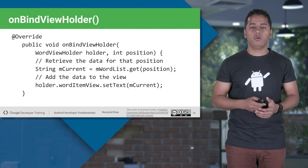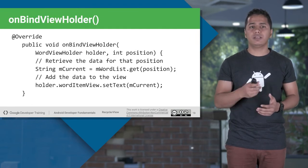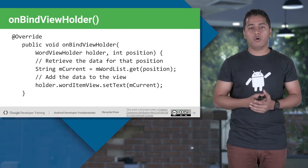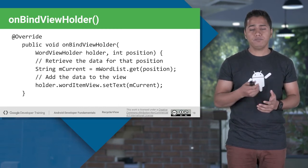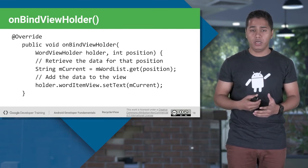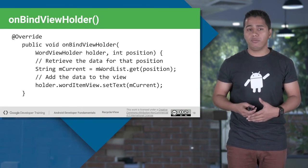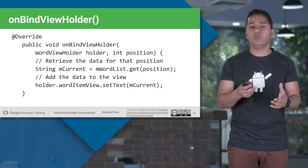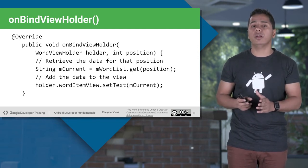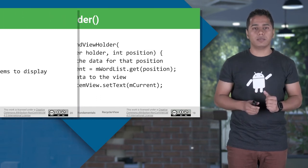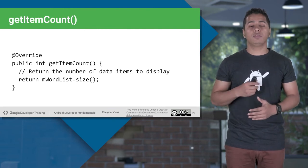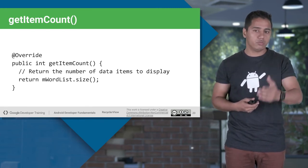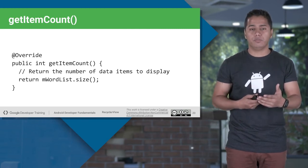In onBindViewHolder, you already have the ViewHolder object. Use holder.yourTextView to set the text, or holder.yourImageView.setImageResource() to set the image, using the data passed in the constructor. In getItemCount, return the length of your data so RecyclerView knows how many times to iterate.